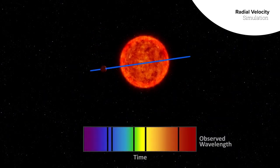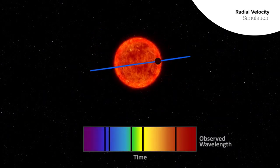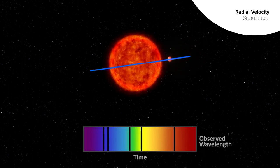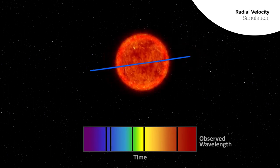If the planet and star are oriented so that the star is moving toward or away from us, instead of side to side, we can detect the planet as a shift in the star's light.